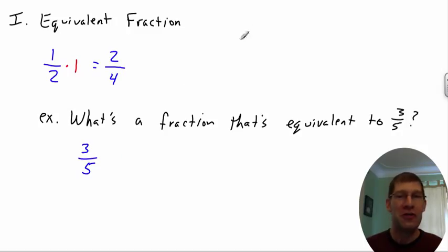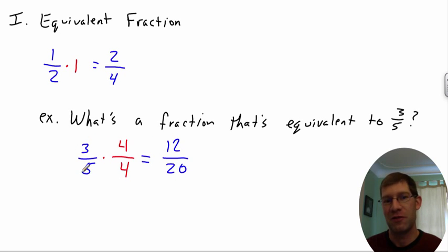So what you could do with the 3 fifths though is say, well, as long as I multiply it by some number over itself, then I'm essentially just multiplying by 1. So, say I multiply both 3 and 5 by 4, well, 4 over 4 is just 1. So essentially I'm multiplying my fraction by 1, which doesn't change its value. 3 times 4 gives me 12, 5 times 4 gives me 20, so then 12 over 20 is going to be a fraction that's equivalent to 3 fifths.